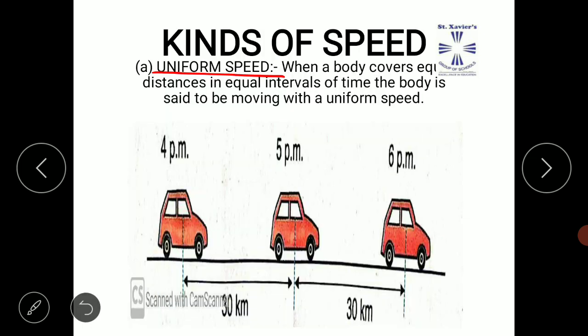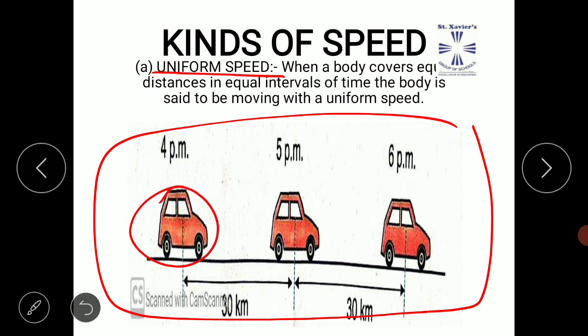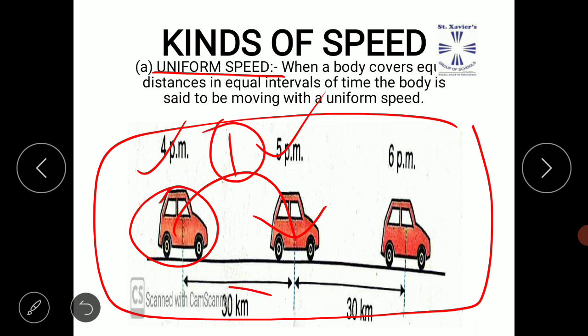First, uniform speed. Looking at the picture on the screen, here is a car moving from one place to another. It starts at 4 p.m. and reaches at 5 p.m., so the time interval is one hour and the distance covered is 30 kilometers.